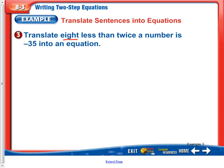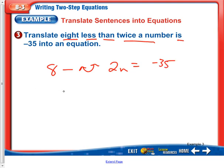Translate: 'eight less than twice a number is negative 35.' Eight less than — 'than' tells us to flip it. Twice a number is two n, and the result is negative 35. So let's rewrite that correctly: two n minus eight equals negative 35, and that would be our equation.